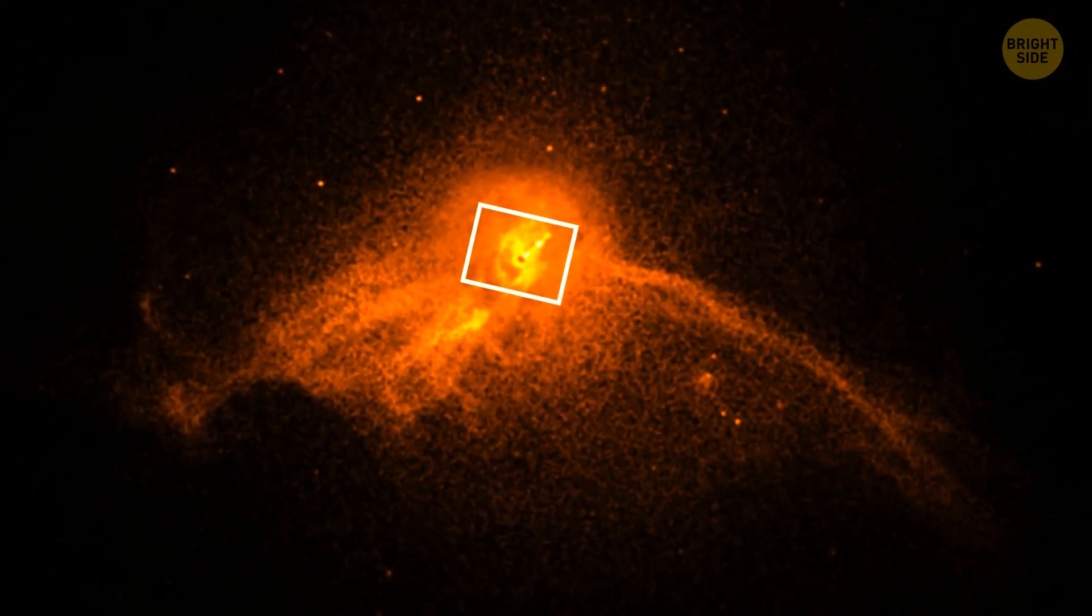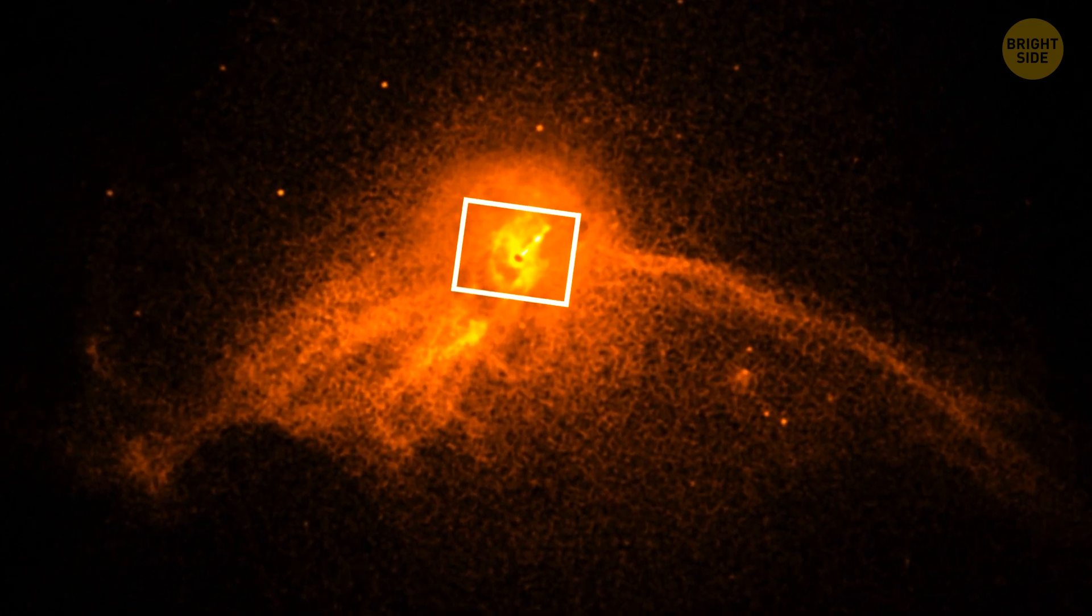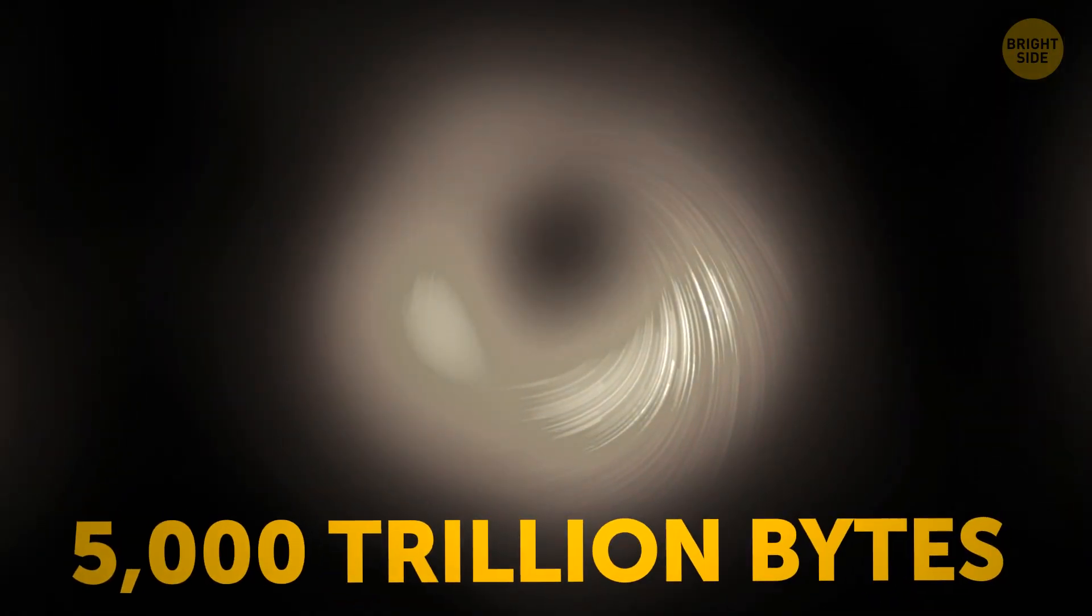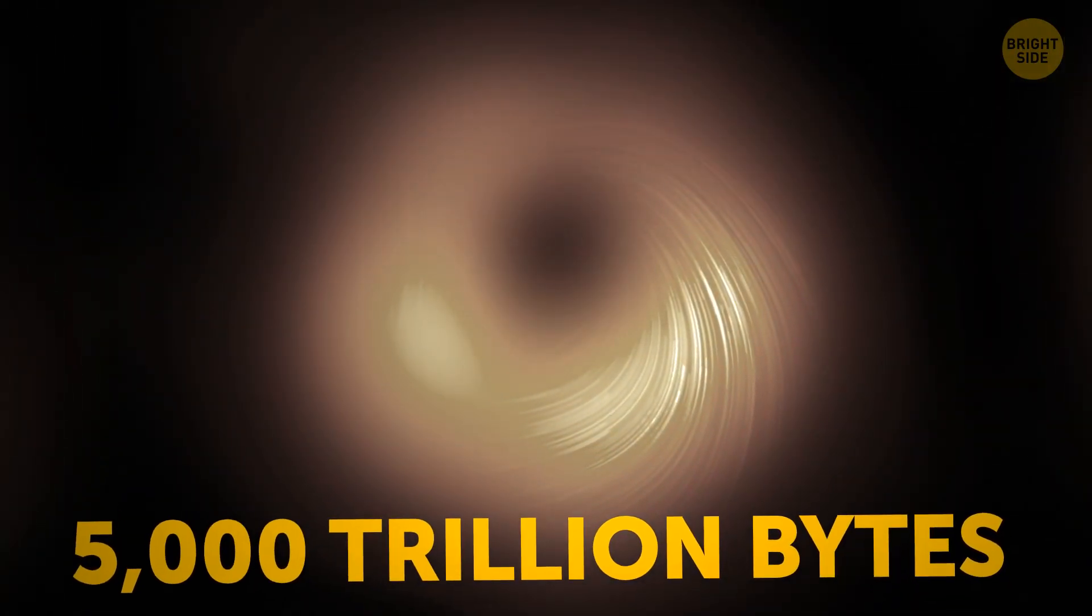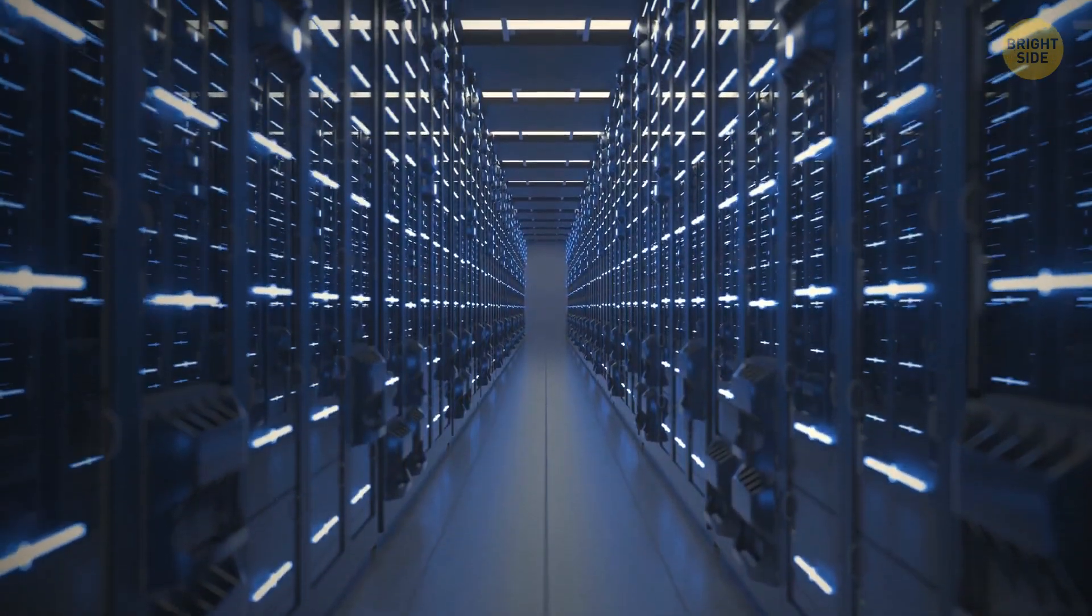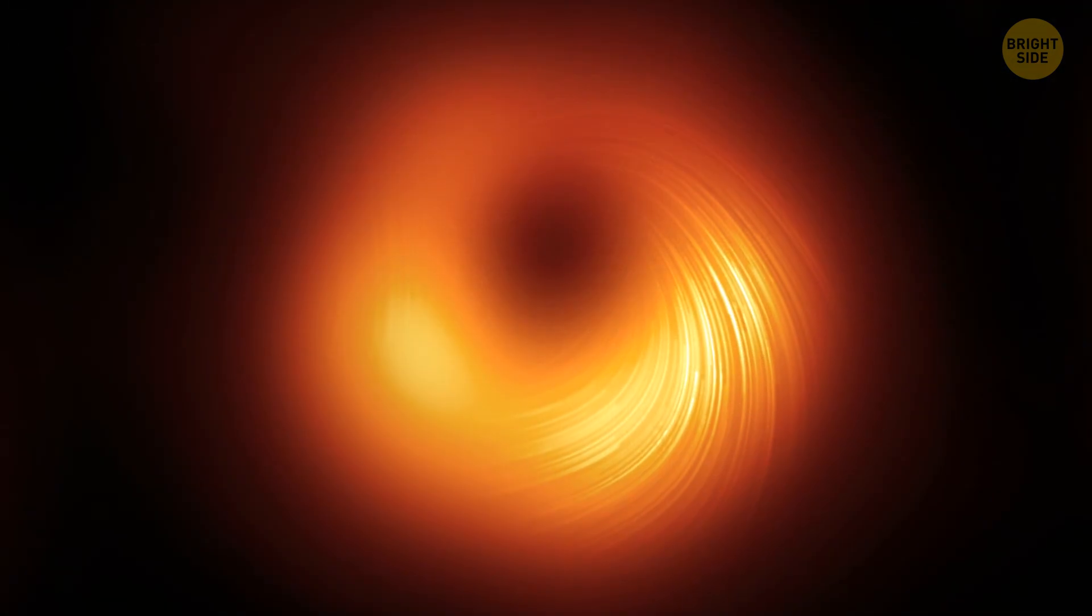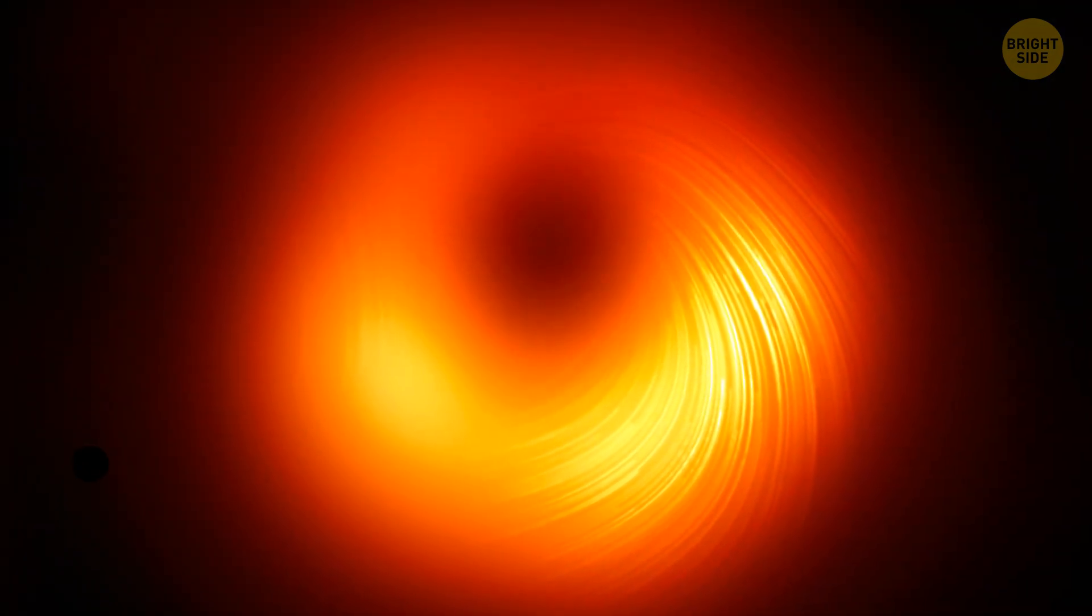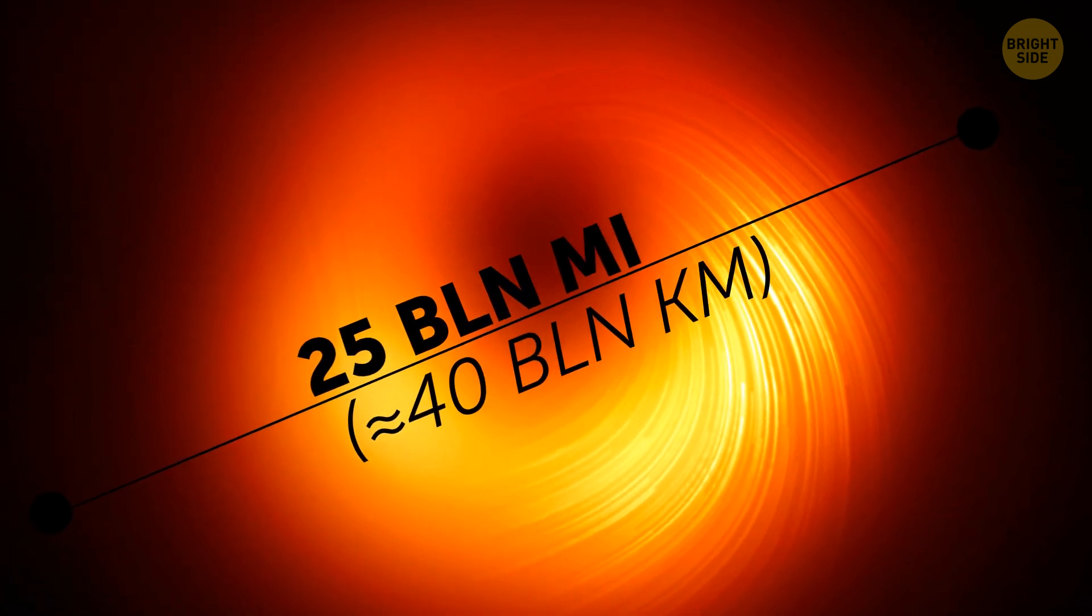All in all, the process resembled a carefully coordinated dance. But thanks to these preparations, in over two weeks, the telescopes collected 5,000 trillion bytes of data. It was then processed by several supercomputers, and scientists finally got the long-awaited images. And what they observed was a monster of a black hole measuring about 25 billion miles across.